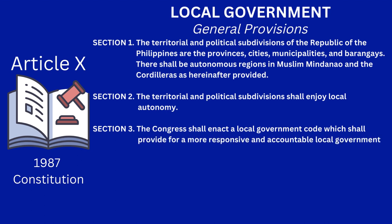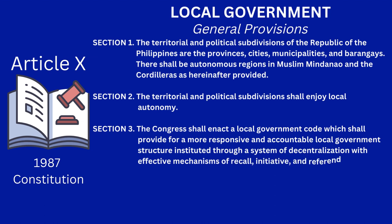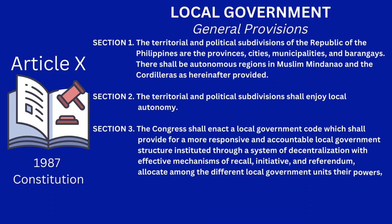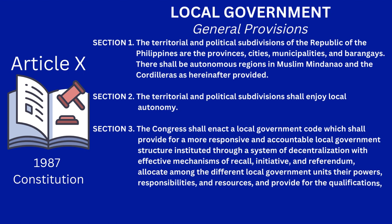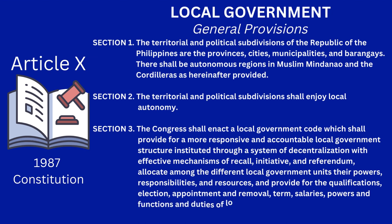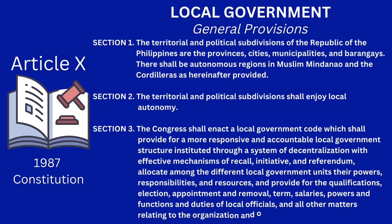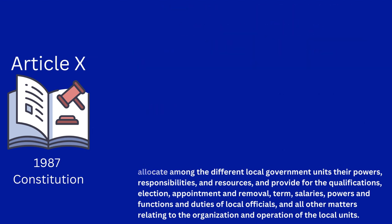Section 3: the Congress shall enact a local government code which shall provide for a more responsive and accountable local government structure, instituted through a system of decentralization with effective mechanisms of recall, initiative, and referendum; allocate among the different local government units their powers, responsibilities, and resources; and provide for the qualifications, election, appointment and removal, term, salaries, powers and functions and duties of local officials, and all other matters relating to the organization and operation of the local units.